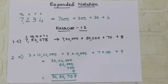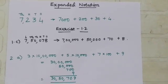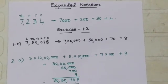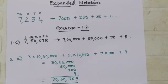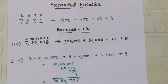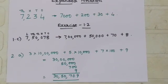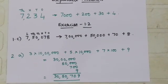Hello children, today we are going to learn about expanded notation. When we write a number, say 7234, we write it in expanded form as 7000 plus 200 plus 30 plus 4.